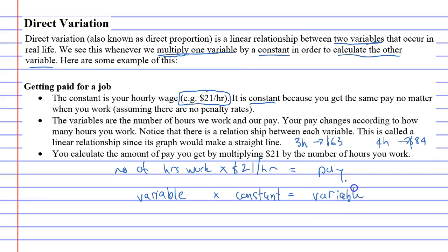Just like we mentioned at the very beginning, you multiply one variable by a constant in order to calculate the other variable.